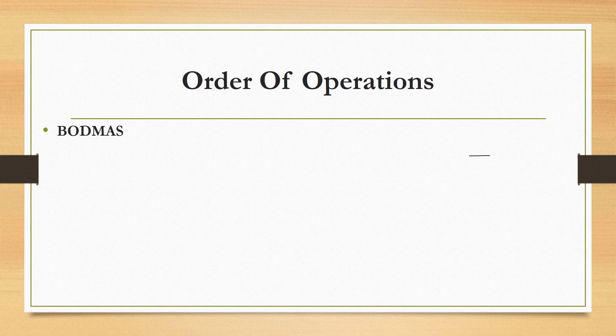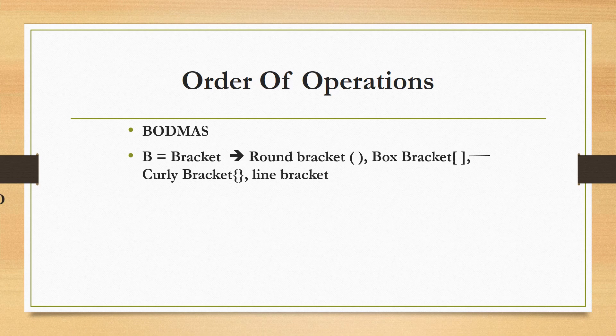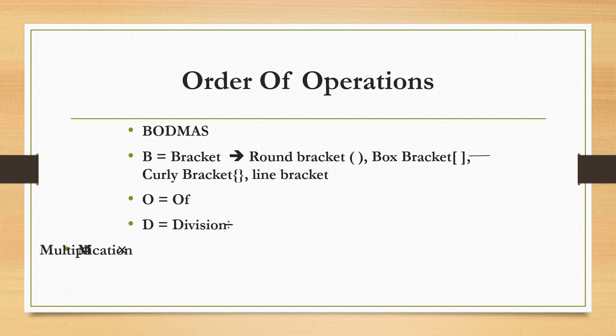BODMAS: First operation, the bracket. Second operation, off. Multiply the two numbers having off between them. Third operation, division. Fourth, multiplication. Fifth, addition. And the last, subtraction.